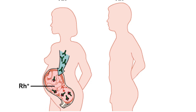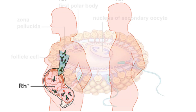If the woman becomes pregnant again and the fetus is Rh positive, her circulating antibodies will act against it. The attack of maternal antibodies against the fetal red blood cells can be fatal.